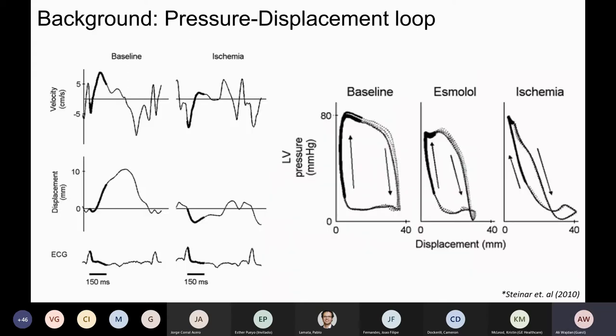Another method is the pressure displacement loop. Pressure displacement loop area is the kind of loop where the displacement is obtained from the accelerometer recordings or accelerometers attached to the heart.